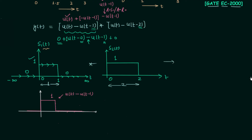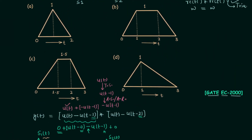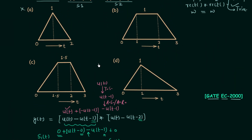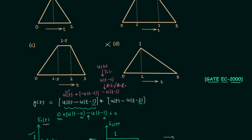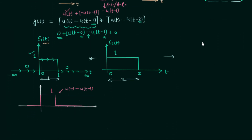Since the two pulses have unequal widths, the resultant signal after convolution is going to be a trapezoid. Therefore options A and D are not correct because they have triangular waveforms. We are now left with option B and option C, and for this we need the exact waveform of the resultant signal.